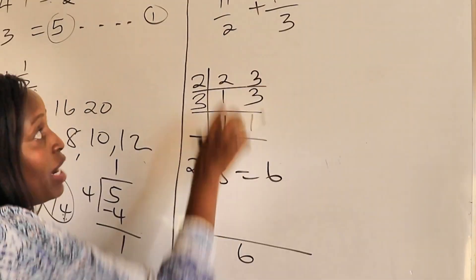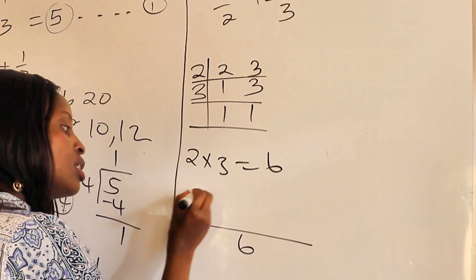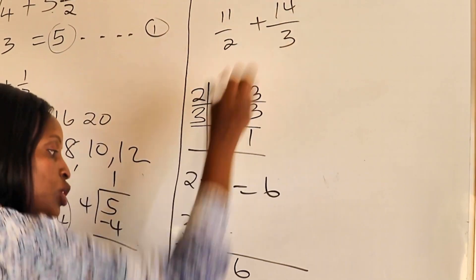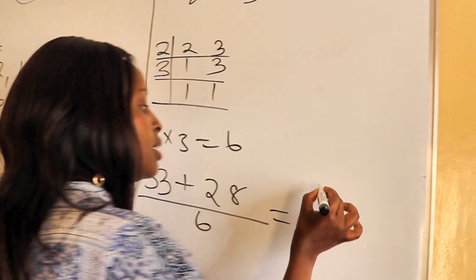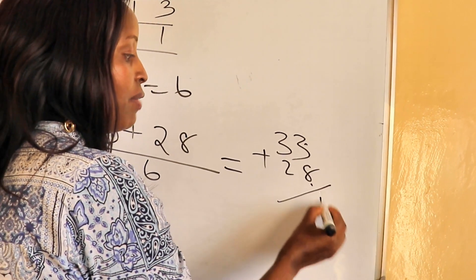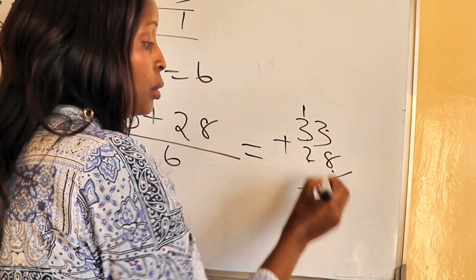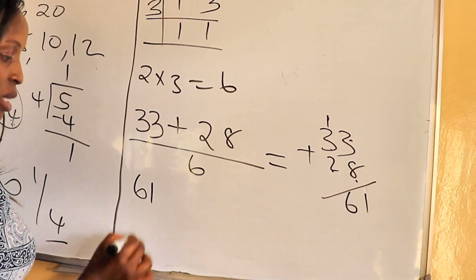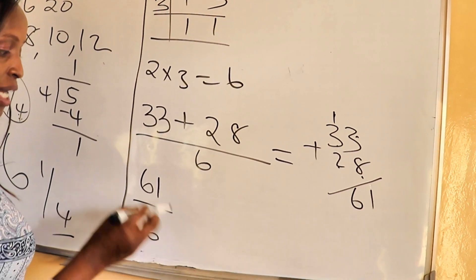After finding the LCM of six, we rename the fractions. Six divided by two is three, three times eleven is thirty-three. Six divided by three is two, two times fourteen is twenty-eight. Now we add: thirty-three plus twenty-eight. Three plus eight is eleven, carry one; one plus three plus two is six — giving us sixty-one over six.